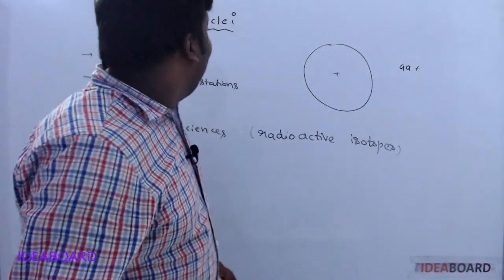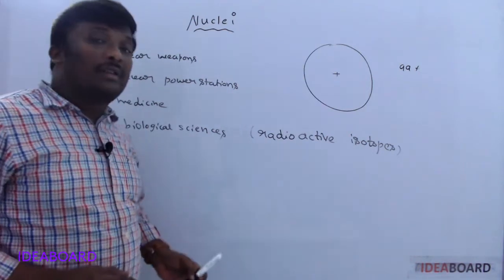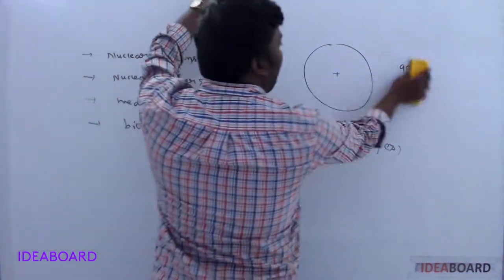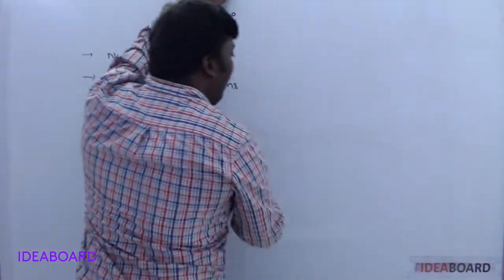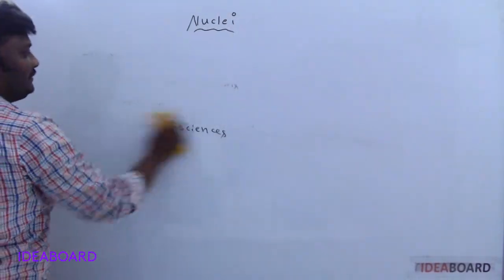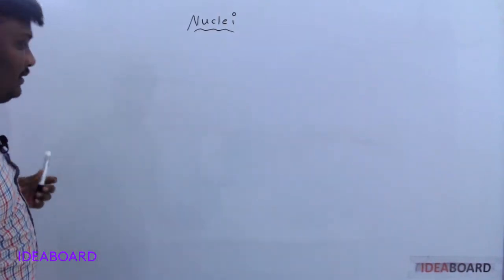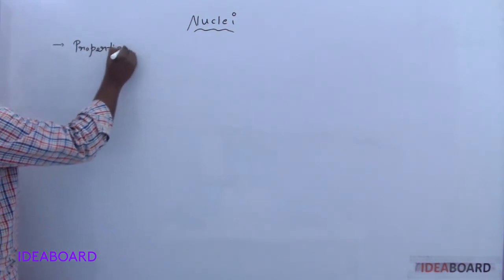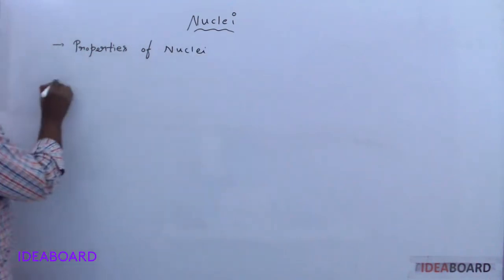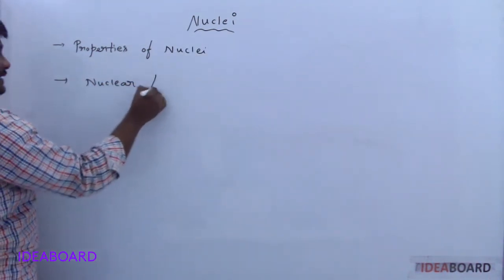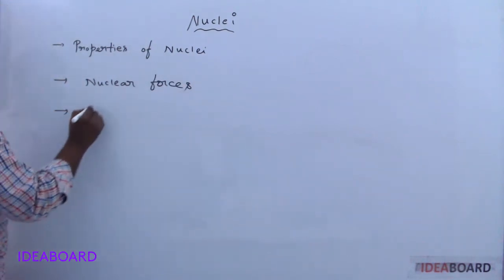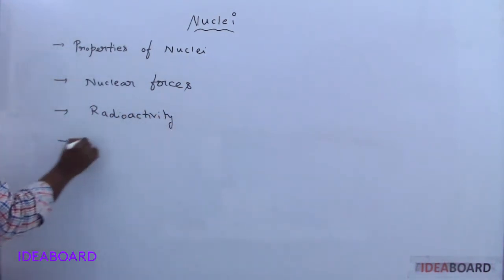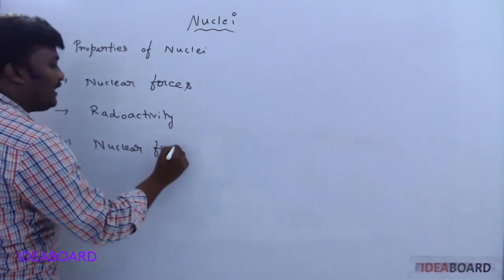In this lesson on nuclei, we will discuss what is radioactivity and how alpha, beta, and gamma radiations are released from the nuclei. Mainly in this chapter, we are discussing about properties of nuclei and nuclear forces, radioactivity, nuclear fusion and nuclear fission.